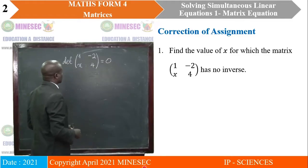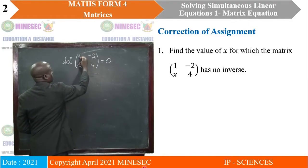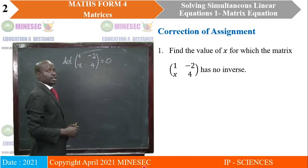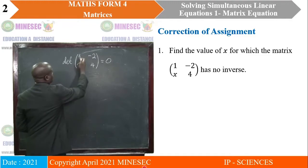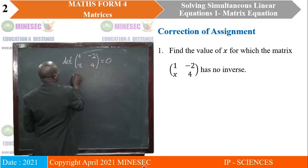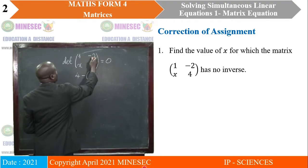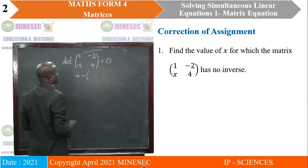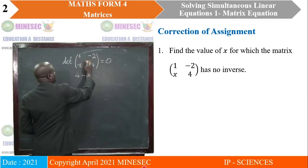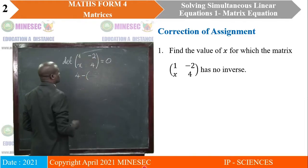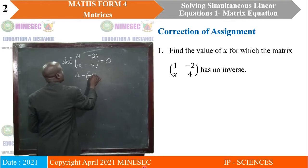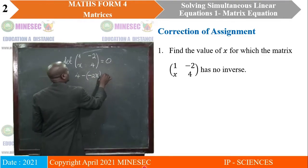To calculate the determinant, we find the products of the elements in the leading diagonal. So we will have 1 times 4, which gives us 4, minus the product of the elements in the other diagonal. So we have x times negative 2, which gives us negative 2x. That should be equal to zero.